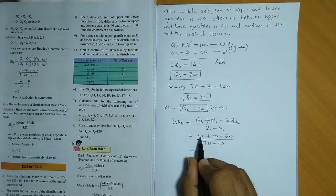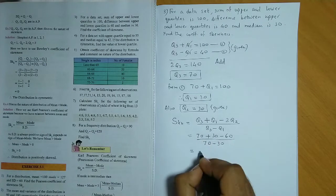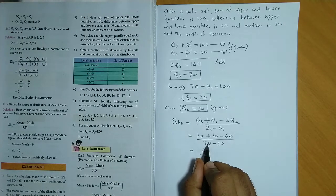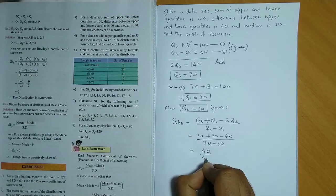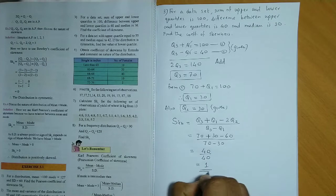Now let us simplify. Now 70 plus 30 is 100, 100 minus 60, it is 40 divided by 70 minus 30, it is 40. So SKB value is 1.